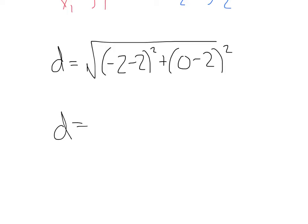Going from there, we'll get d equals the square root, negative 2 minus 2, is negative 4 squared. And I'm going to put parentheses around this negative, because that negative is going to have to get squared as well.